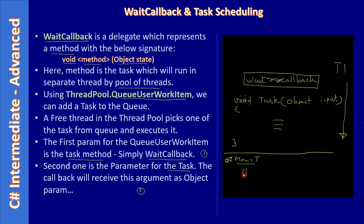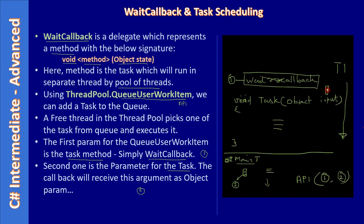We are creating a task and submitting it to QueueUserWorkItem. If a task depends on some input, you can prepare that input and pass it as a second parameter to QueueUserWorkItem. The API takes the method callback as the first parameter, then any input parameter you want to pass as the second parameter, and that same value will arrive as the parameter inside the task when it runs.